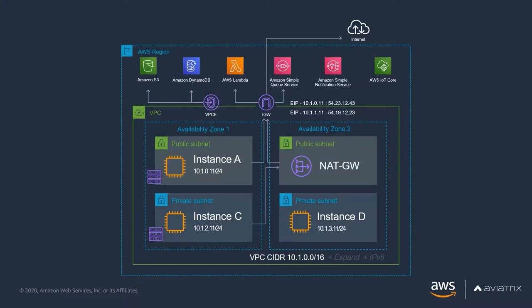I want to start with some AWS networking fundamentals. This looks like a busy slide, but I'll walk you through some important components. What we have here is an AWS region and an Amazon VPC. A VPC is a regional-level construct, so it spans availability zones. When you create a VPC, you can assign an IPv4 CIDR range, add additional IPv4 CIDR ranges, and optionally assign an IPv6 CIDR block. You see two availability zones with public and private subnets where you have your EC2 instances.